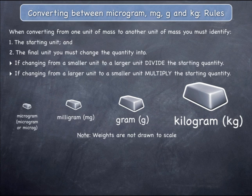To clarify this, consider the units of mass ordered from smallest to largest as you move from left to right. Each unit is 1000 times larger than the unit immediately to its left.